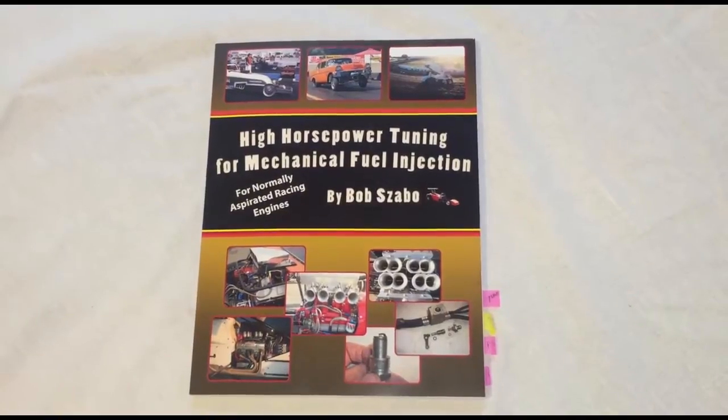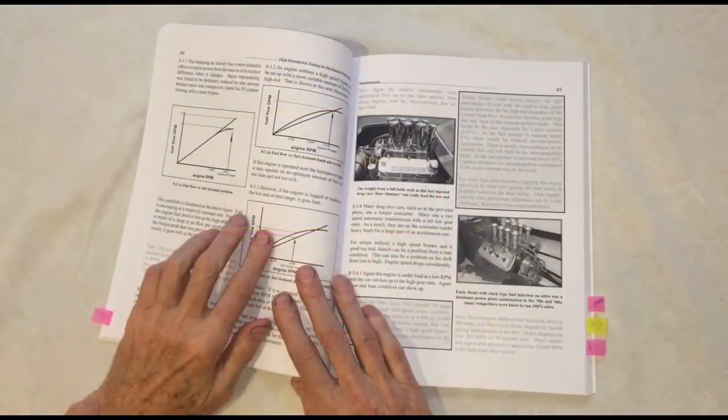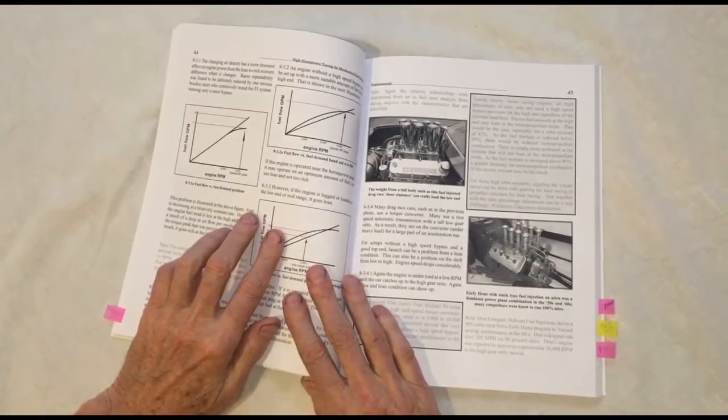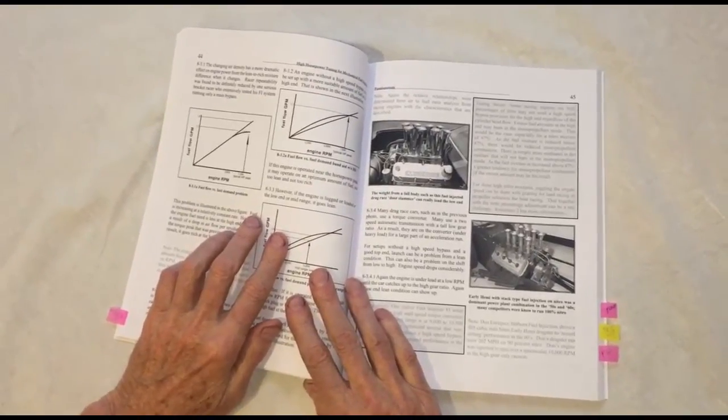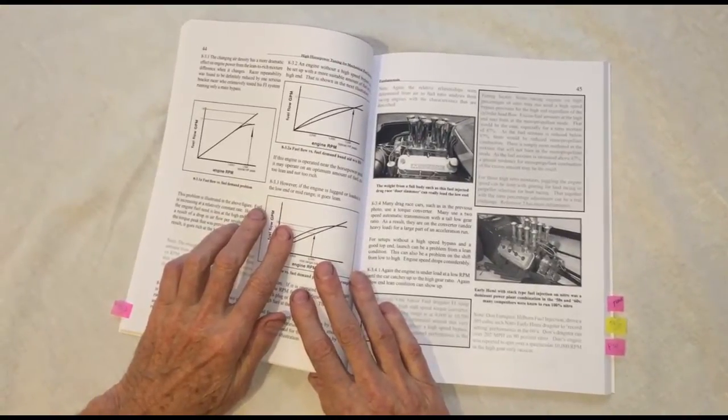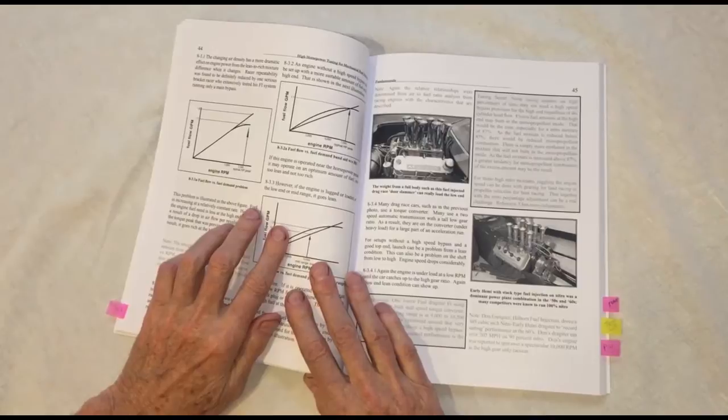The fuel curve for maximum power for applications without a high speed bypass is described. In other applications, proper flatlining with a high speed bypass for maximum power is detailed.